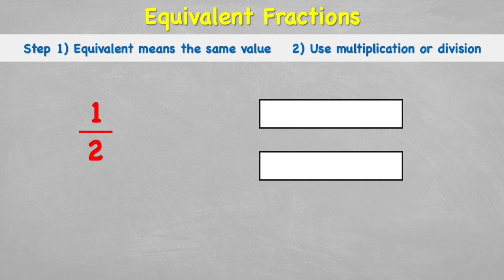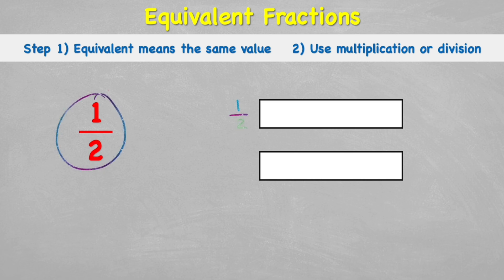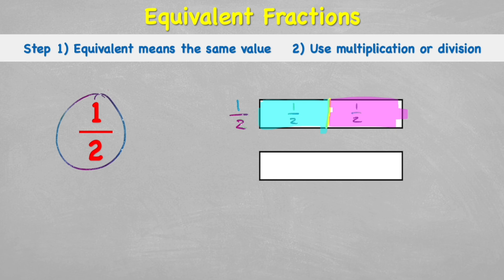Let's use these two chocolate bar models to show what I mean. If we make this first chocolate bar a half, we cut it down the middle and create two equal halves — remember, a fraction has to be equal. My blue half is the same as my pink half. But that's not the only way we could have chopped this bar — we could chop it into four equal parts by cutting each half in half again, making each section worth one quarter.